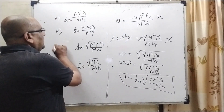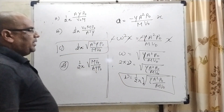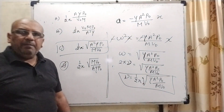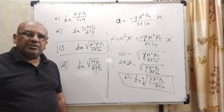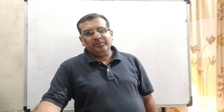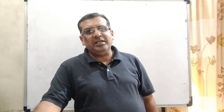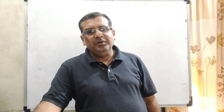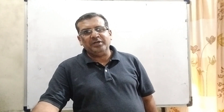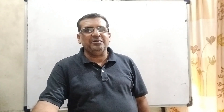Option C is correct: 1 upon 2π times root of γ·A²·P0 upon M·V0. I hope you understood this question. Thank you for staying till the end of this video. When you become successful, full contribution goes to your hard work. But if my videos and lectures help in your success, I will consider myself lucky. Please like, share and subscribe my channel. Thank you once again. Take care. Bye-bye.